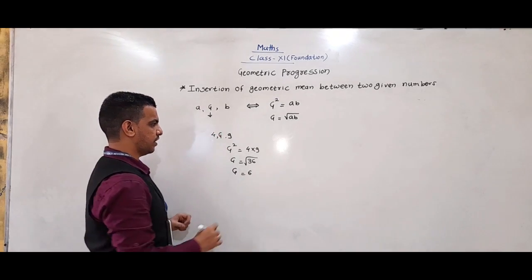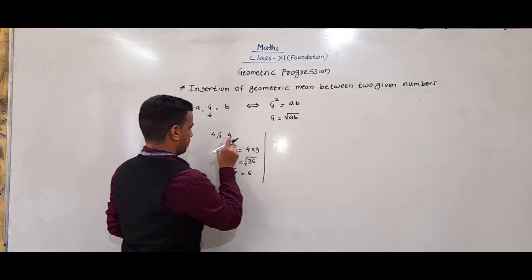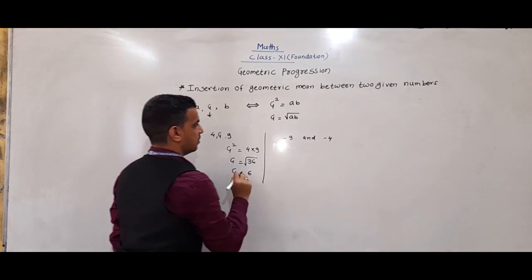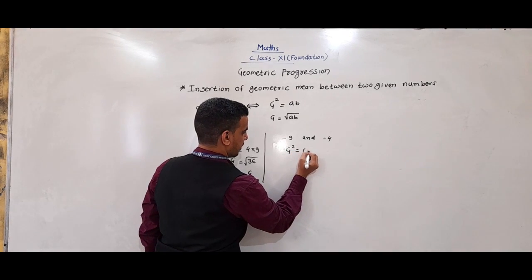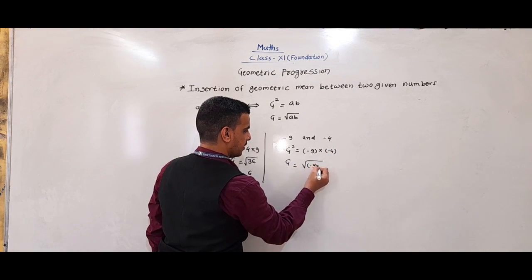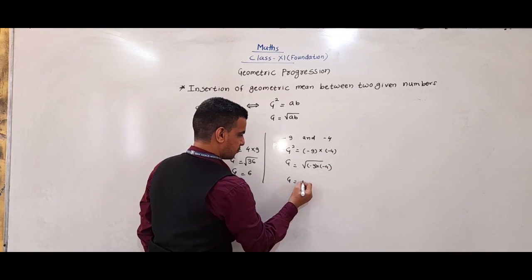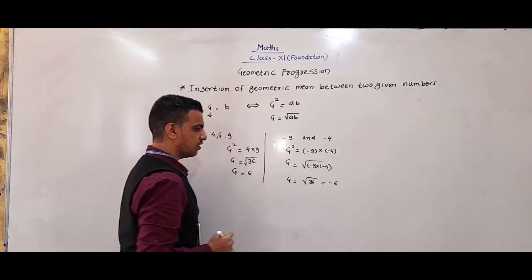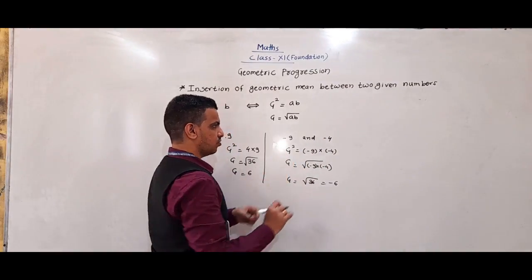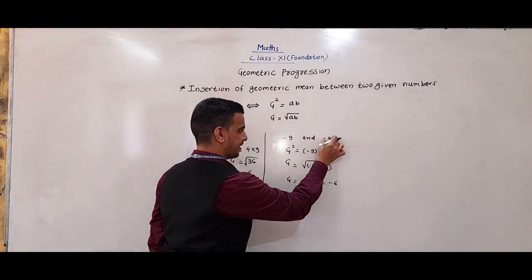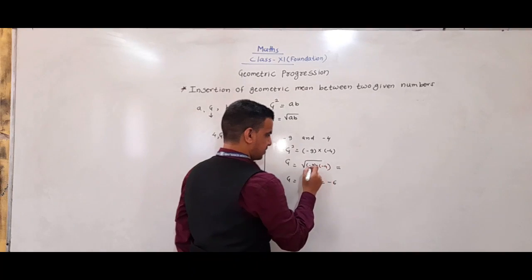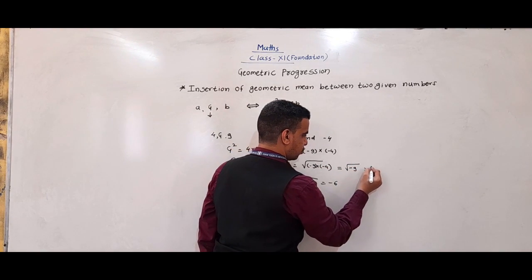Similarly, if we have to insert a geometric mean between −9 and −4, then G² = (−9)(−4), that is G = √(−9 × −4) = √36. We take G = −6. If we simplify √(−9) × √(−4), we get 3i × 2i = 6i².